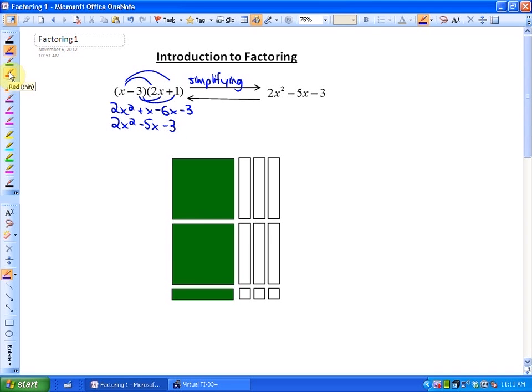To go the reverse direction from the simplified expression to the factors, that's called factoring. And that process is a little bit more difficult and a little bit more different.